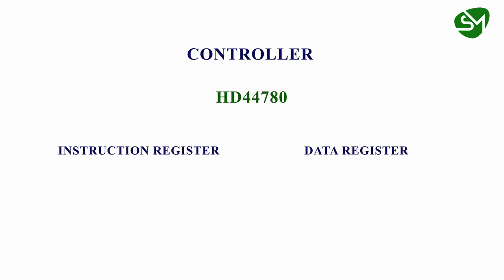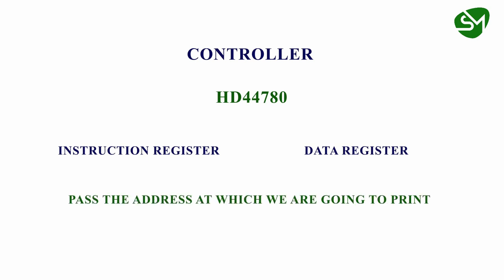One is the instruction register and another one is the data register. We just need to do two things: pass the address at which we are going to print to the instruction register, and pass the data that we are going to print to the data register. Then the character gets printed.